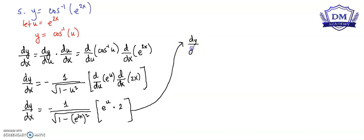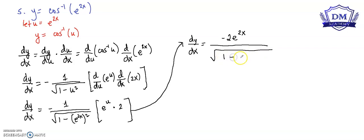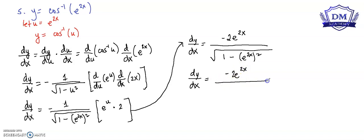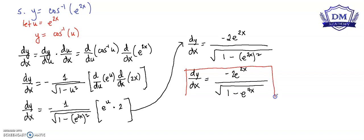So our dy/dx is equal to negative 2e^(2x) all over the square root of 1 minus (e^(2x))². Expanding, the square of e^(2x) is e^(4x), so dy/dx equals negative 2e^(2x) all over the square root of (1 - e^(4x)). This is the derivative of y with respect to x. Thank you for watching.